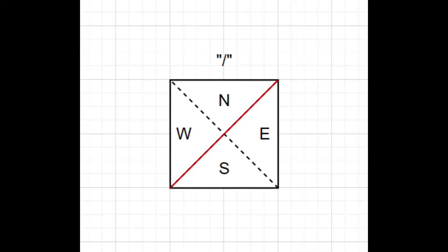For example, if a square contains a slash, you can think of it as a boundary that separates the square into two parts, one containing the north and west regions, and one containing the south and east regions.